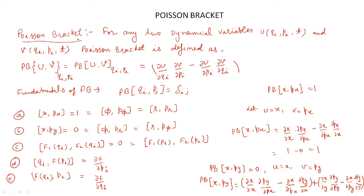Hello everyone. Today we will discuss the Poisson bracket of two dynamical variables which are functions of the generalized coordinate and generalized momenta. Here you can see that there are two functions u and v which are functions of the generalized coordinate, generalized momenta, and time. The Poisson bracket for such functions can be written as (del u / del qi)(del v / del pi) minus (del u / del pi)(del v / del qi).